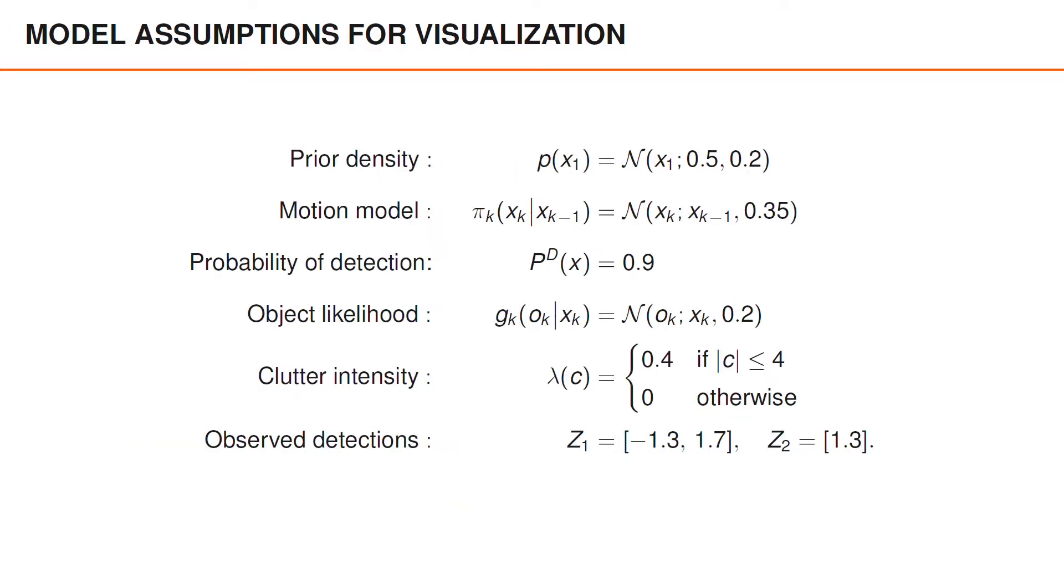You may recall the video where we visualized the conceptual solution. In this video, we present detailed equations for the conceptual solution, and we return to the same visualization to confirm that it matches the equations that we present here. To briefly summarize the simulation scenario, we assume linear and Gaussian motion and measurement models, pi_k and g_k. The initial prior is Gaussian and P_D is 0.9. We obtain two detections at time 1 and one detection at time 2.